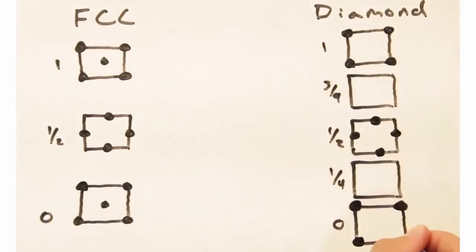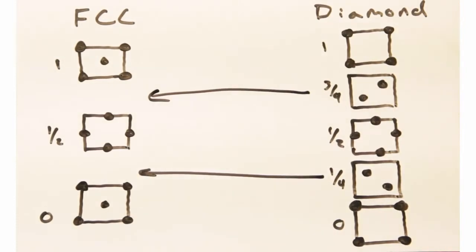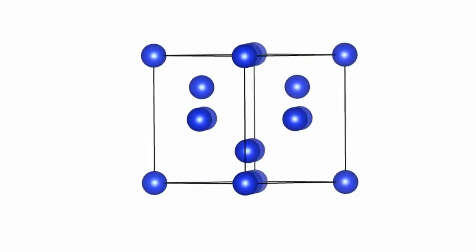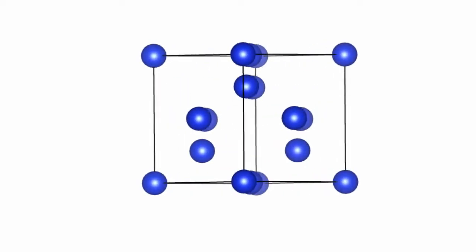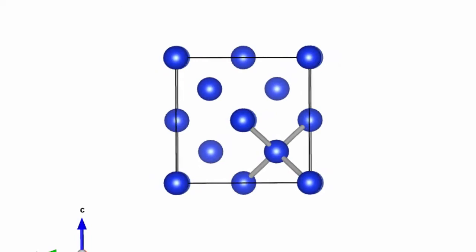Oh, the two are almost the same, except the diamond structure has these extra two slices at A3 equals a fourth and three quarters in reduced units. Now if I look back at the diamond structure in Vesta, I can see every atom has a coordination number of four, consistent with sp3 hybridization.